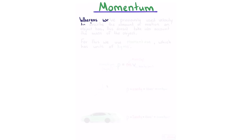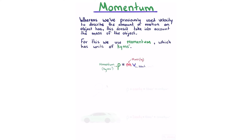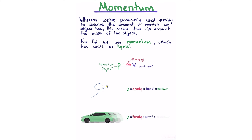Momentum. Velocity alone doesn't account for an object's mass, so we use momentum, which has units of kg meters per second. As an equation, momentum equals mass times velocity. A bullet with mass 0.01 kg and velocity 10 m/s has a momentum of 0.1 kg m/s, whereas a car at the same velocity but much larger mass has a much larger momentum.